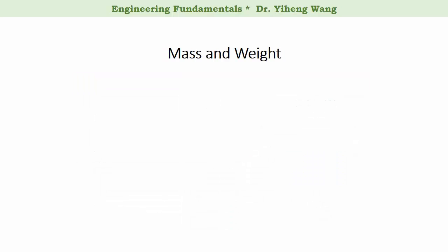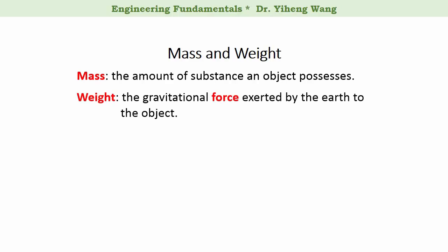In order to clearly understand these units, it is important that we understand that mass and weight are two completely different concepts. Mass is the amount of substance an object possesses, versus weight is actually a force. To be specific, weight is the gravitational force exerted by the Earth to an object on the Earth.